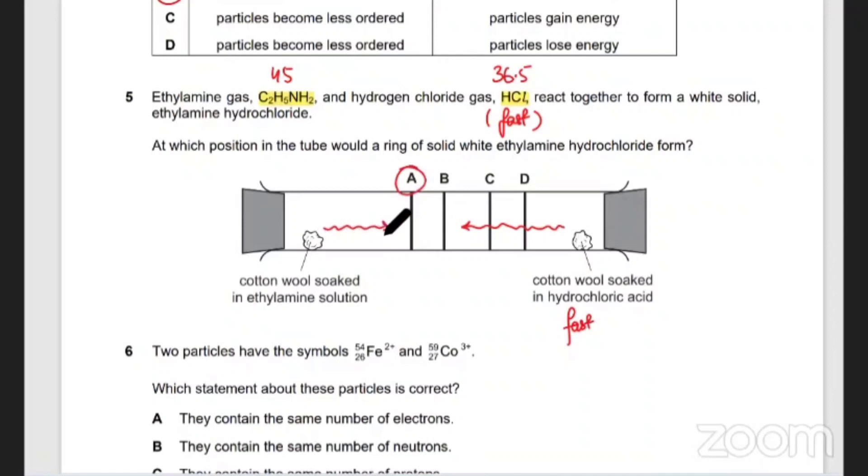It's slowly coming from the other side, and HCl is coming from the other side, so HCl is going to cover a bigger distance. So the ring is not going to be at B, it's right in the center, it's probably going to be A.